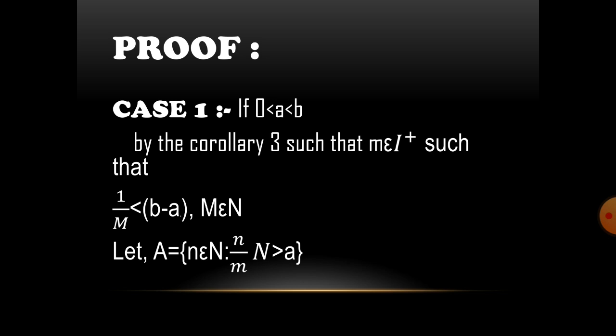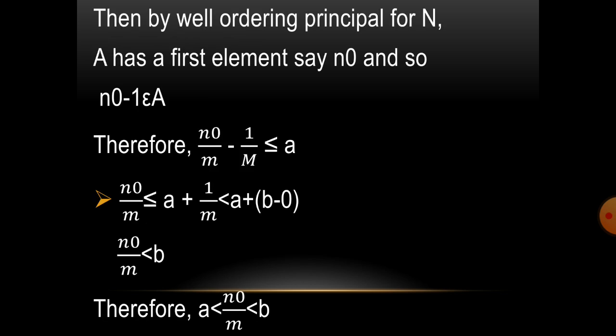Case 1: if 0 < A < B, by Corollary 3, such that N belongs to I+, such that 1/N < B - A, M belongs to N. Let A equal to {N belongs to N: N/M > A}. Then by well-ordering principle, for N, A has a first element, say N0.